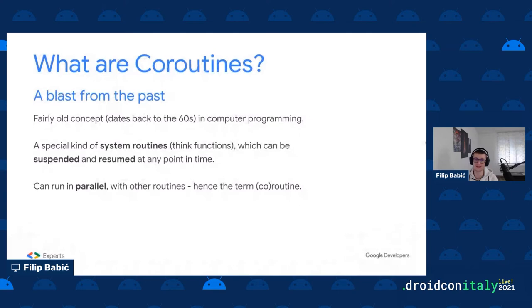So what are coroutines as a computer science concept? It's a fairly old concept dating back to the 1960s. A coroutine is essentially a special kind of subroutine or system routine that can be suspended and resumed. The key thing about coroutines is that they can run in parallel with other routines — hence the name 'co-routine' — instead of basic routines which must finish before anything else proceeds.